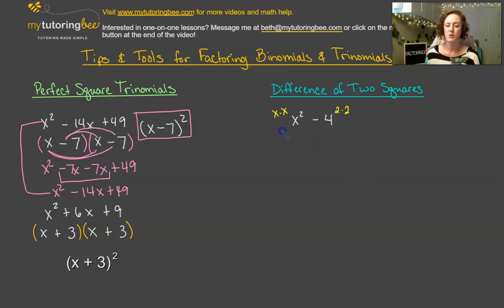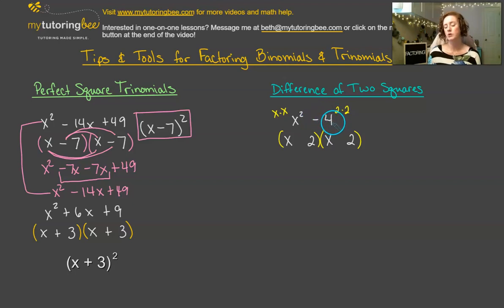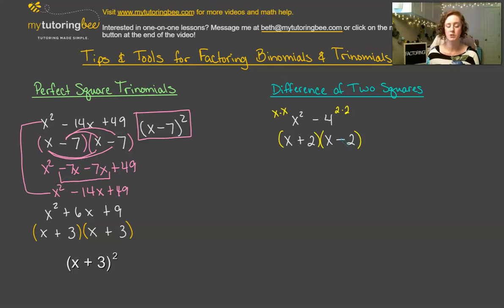We're going to start off with our two binomials. x squared can be separated into x and x, and then 4 is going to be separated into 2 and 2. In order to get a negative 4 when we multiply 2 times 2, one of the 2s has to be positive and one has to be negative. When we FOIL this: x times x is x squared, x times negative 2 is negative 2x, positive 2 times x is positive 2x, and 2 times negative 2 is negative 4.